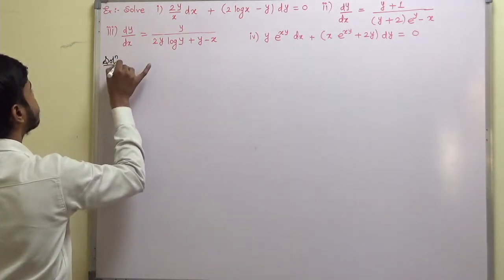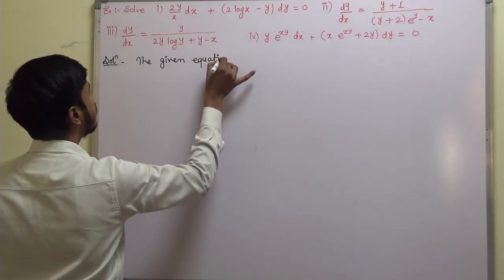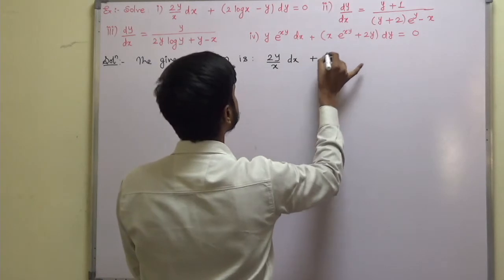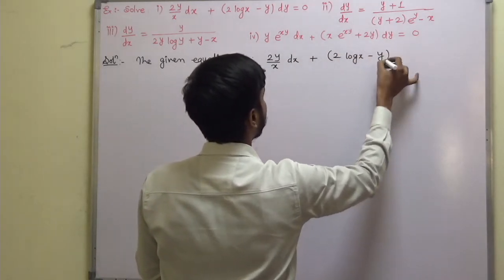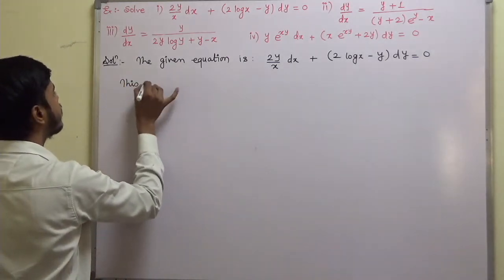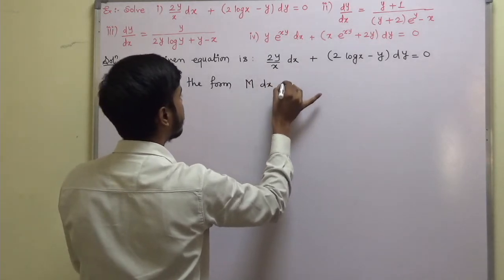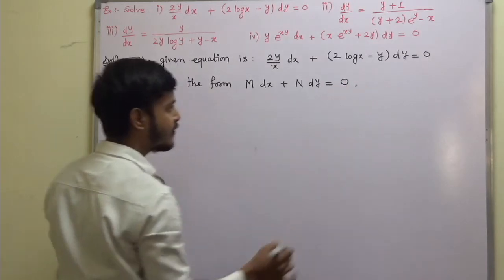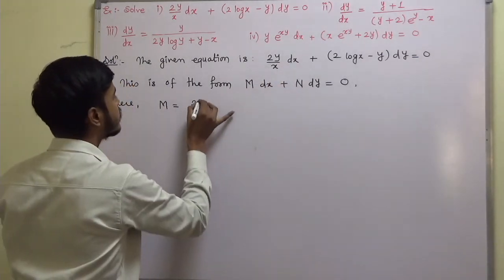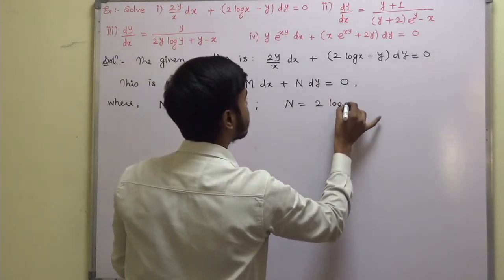Let us start with example number 1. The given equation is 2y/x dx + (2 log x − y) dy = 0. This is of the form M dx + N dy = 0, where M is equal to 2y/x and N is equal to 2 log x − y.